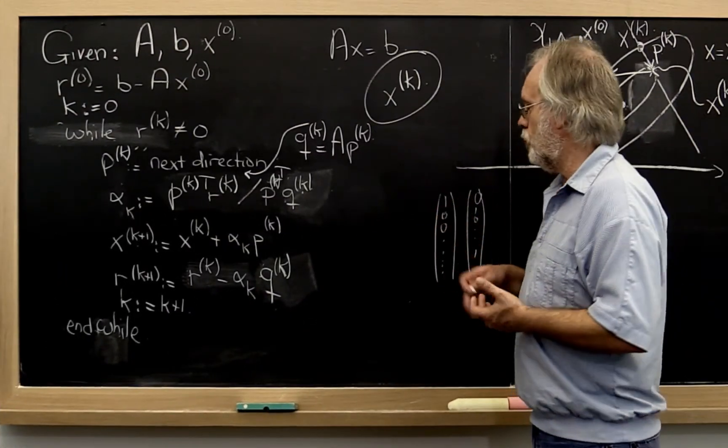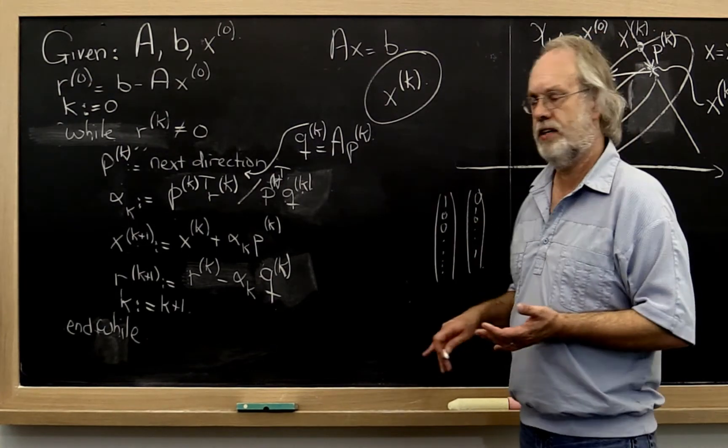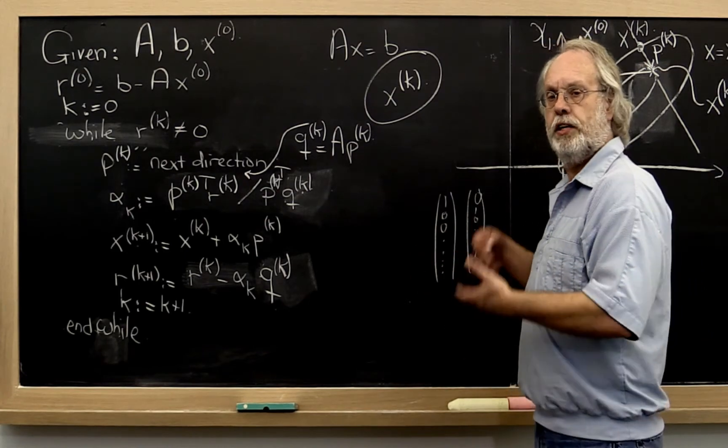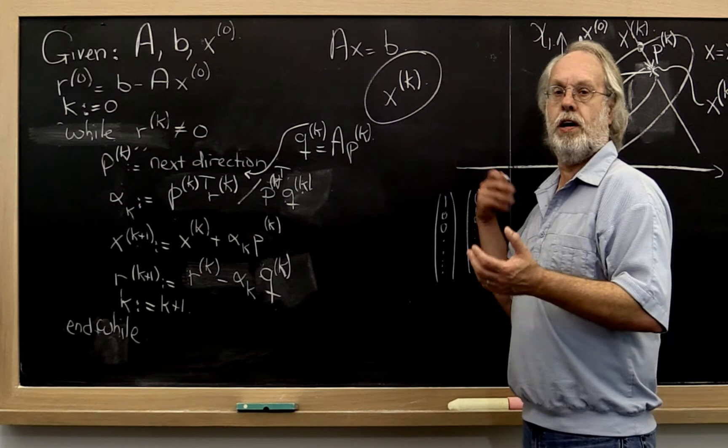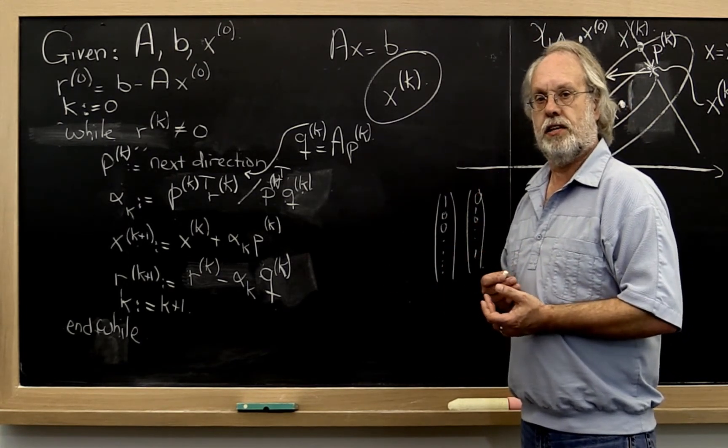And then you're going to ponder: what if I cycle through the standard basis vectors? What if I take my first search direction to be e0, then e1, e2, and so forth? And once I get to the end of them, what if I just go right back to the beginning? You're going to have some interesting insights when you do that.